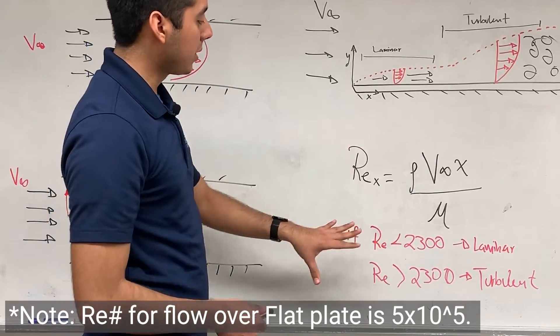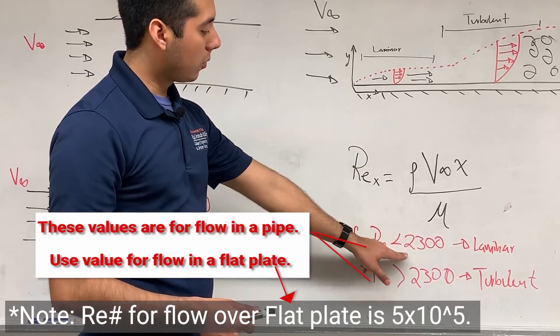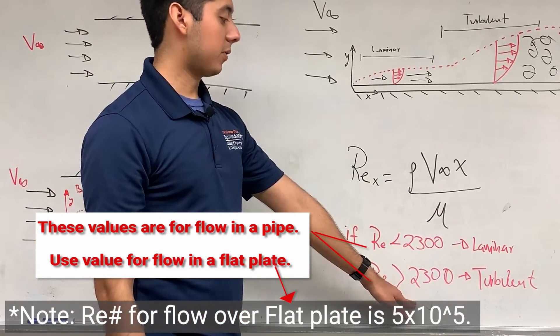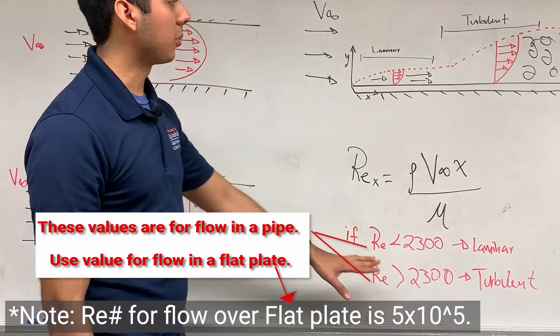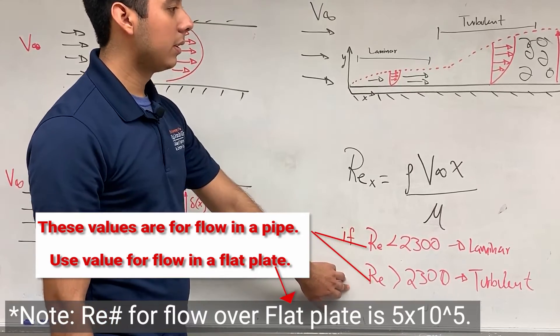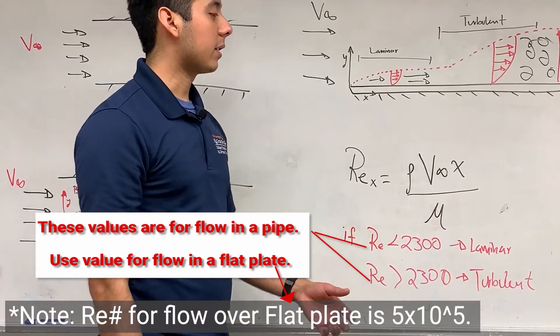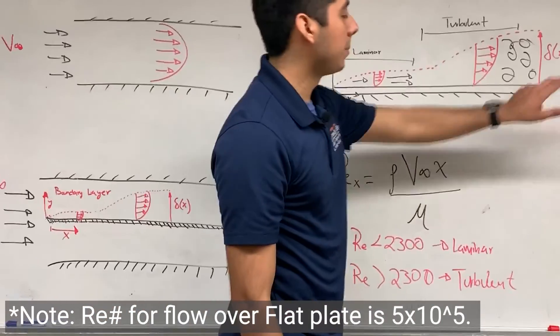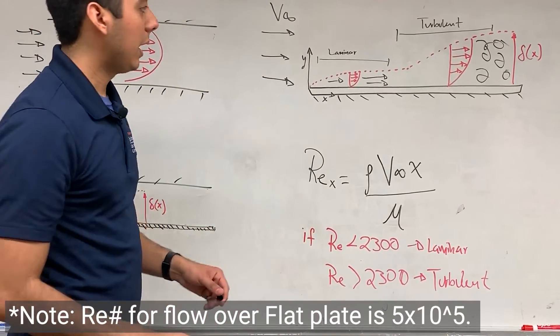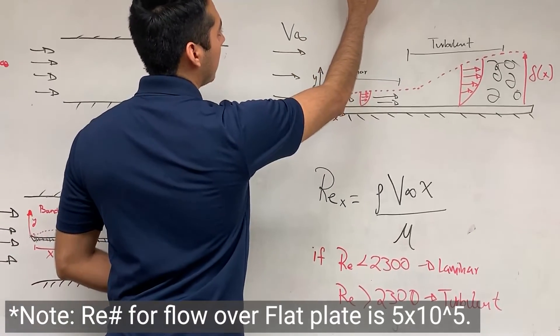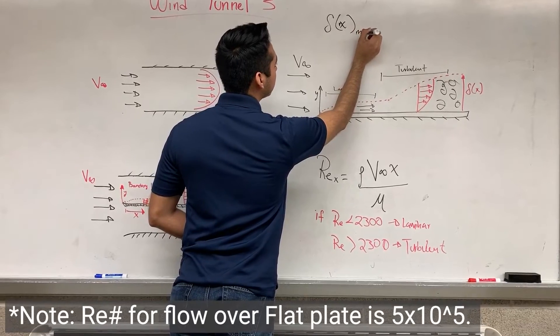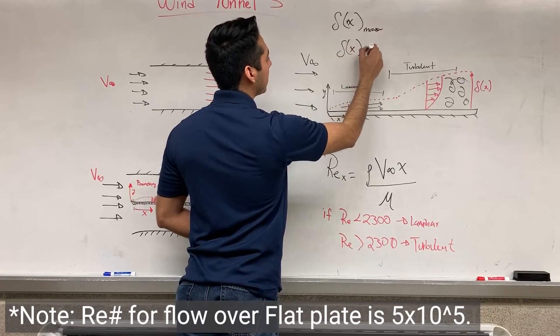Once we do Reynolds number, if you get a value below 2,300, we say that the flow is laminar. And depending if we're getting a laminar or turbulent fluid, that's how we're going to calculate our boundary layer. So you see in your procedure manual, we have two deltas: we have delta measured and we have delta calculated.